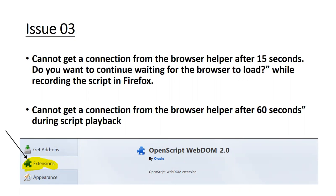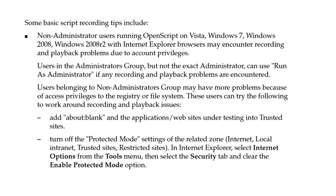Issue number three is related to Firefox extensions. You get the error: 'Cannot get a connection from the browser helper after 15 seconds — do you want to continue waiting?' or during playback: 'Cannot get a connection from the browser after 60 seconds.' To resolve this, open Firefox, go to Extensions, and check that the WebDOM 2.0 extension is enabled — similar to what we did in Internet Explorer.